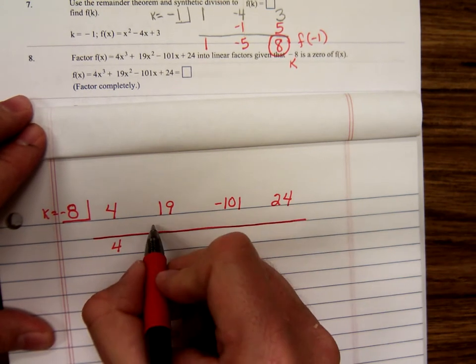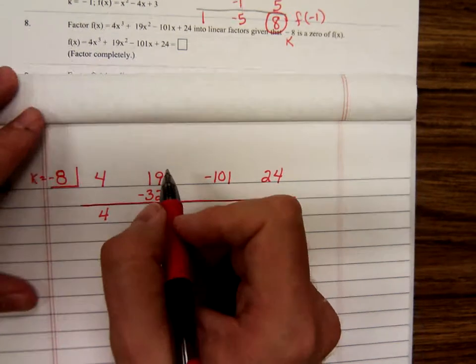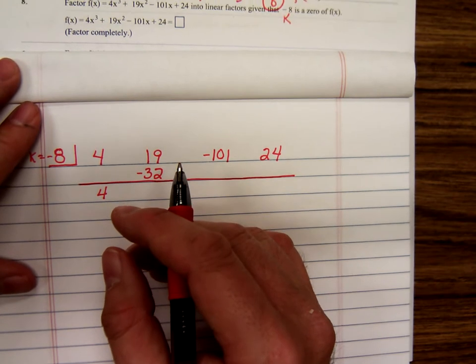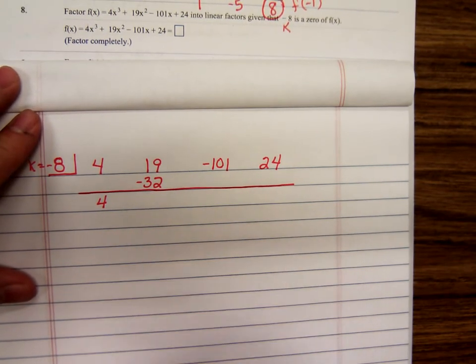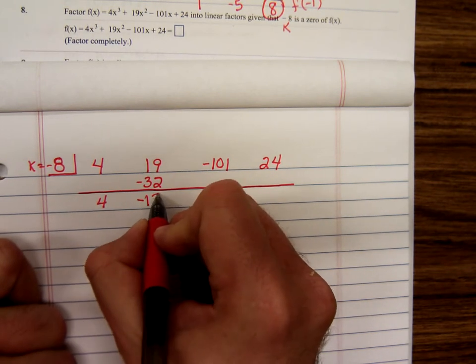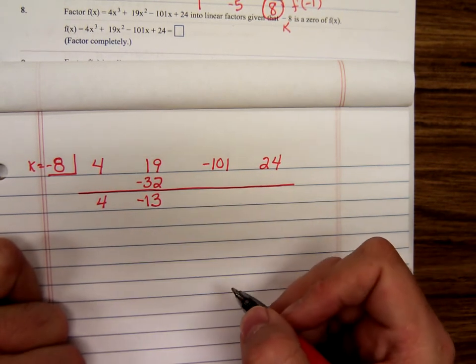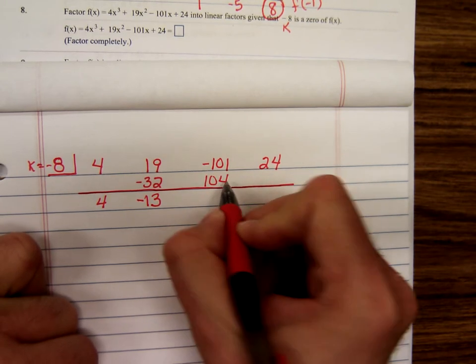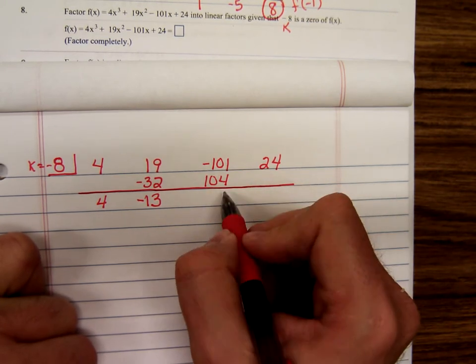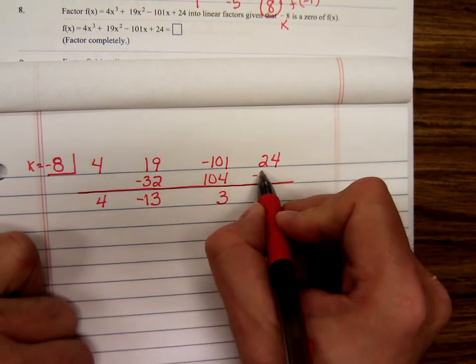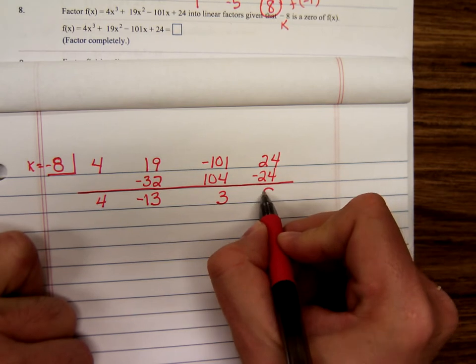Four times negative eight, negative 32. 19 minus 32, that's going to be a negative 13. Negative 13 times negative eight, negative times negative is positive, 104. Negative 104 plus 101, negative one plus 104 is three. Three times negative eight is negative 24. Twenty-four minus 24 is zero.